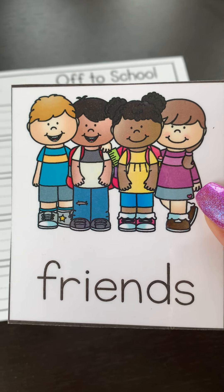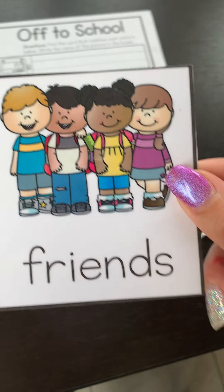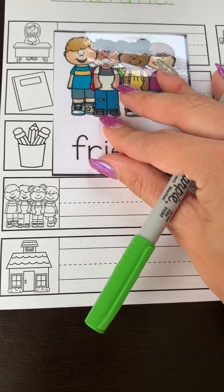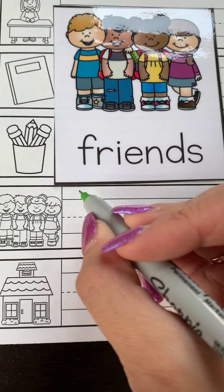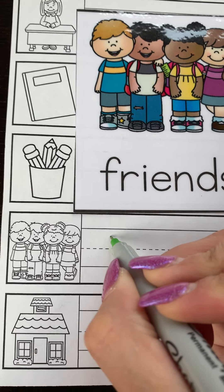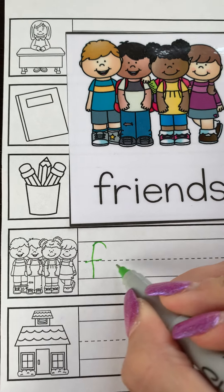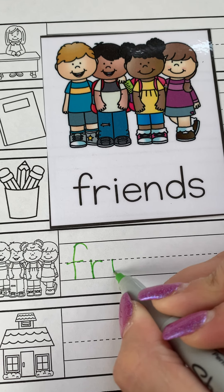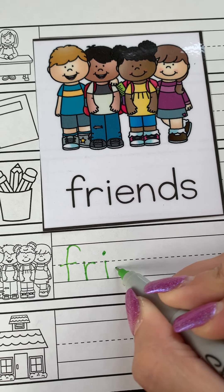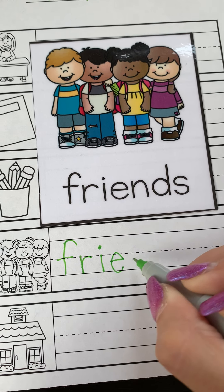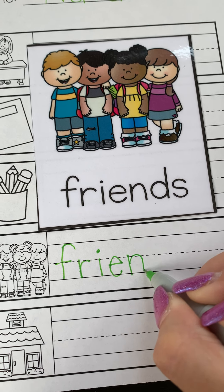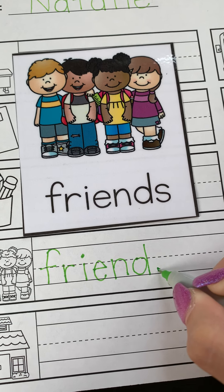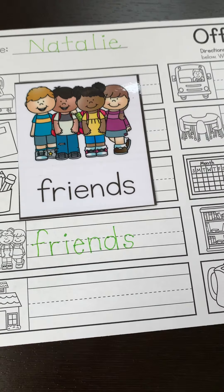Friends! We make friends at school. Friends. F is a skyline letter. F, R, I, E, N, D, S. Friends — more than one friend.